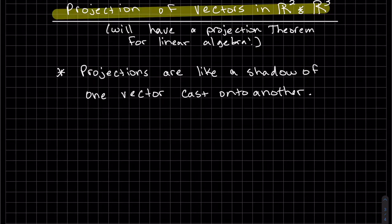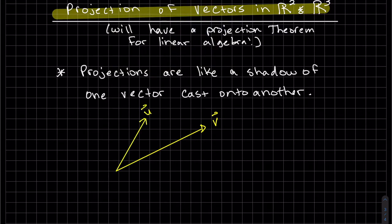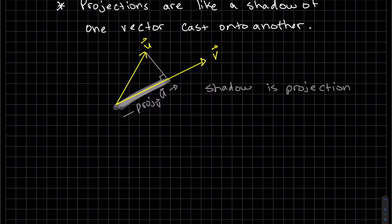They are like shadows of one vector cast onto another. Let me draw a picture of this. Here's vector V, and we're going to cast vector U onto V. So this is our projection of U onto V. The shadow is the projection. So here's the math of it. We can see here it's going to be perpendicular.